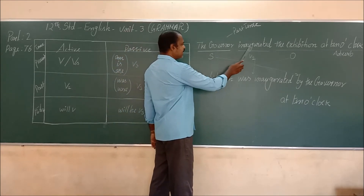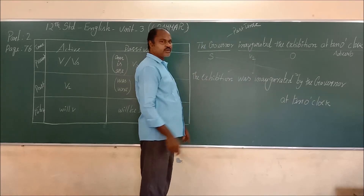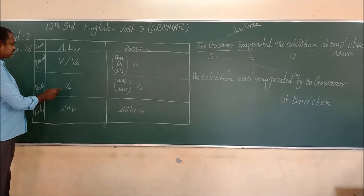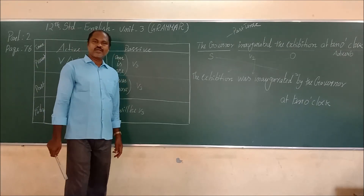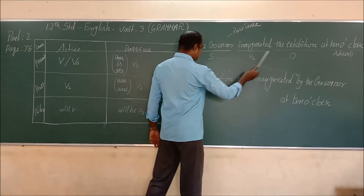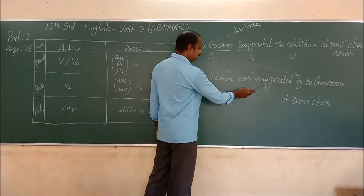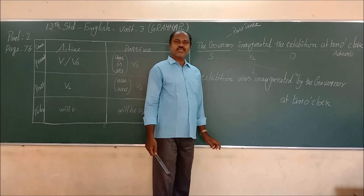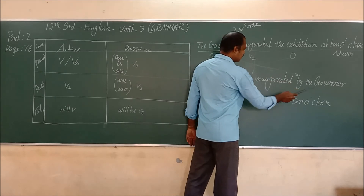In this sentence: 'The governor' is the subject, 'inaugurated' is V2 (past tense), and 'the exhibition' is the object. To convert to passive voice, we shuffle the words. Since 'inaugurated' is V2, the passive condition is was/were + V3. 'The exhibition' is singular, so we use 'was'. The V3 of 'inaugurated' is also 'inaugurated' — many e-form verbs have the same V2 and V3. So the passive voice is: 'The exhibition was inaugurated by the governor at 10 o'clock.'